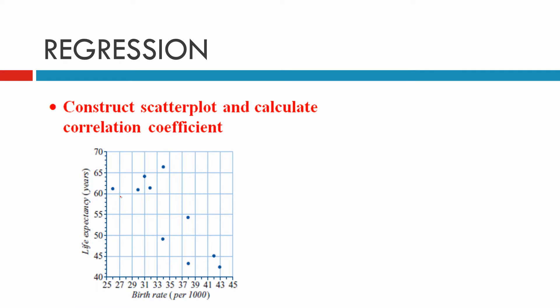First thing we need to do is construct a scatter plot and calculate the correlation coefficient. You can do this on your calculator. We'll give you the calculator steps later. When you construct the scatter plot on your calculator, this is what you get.